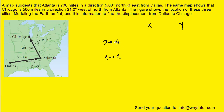So D to A represents Dallas to Atlanta, and A to C is Atlanta to Chicago. We're going to start with the Dallas to Atlanta part of the trip, and we need to find what are known as the X and Y components of that trip. If we look carefully, we can see that we have a right triangle formed by that journey, and we can draw it in.